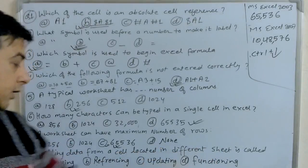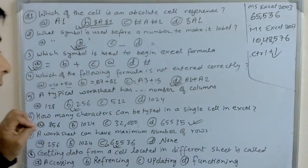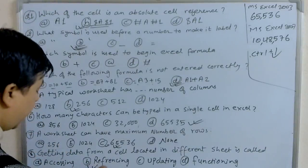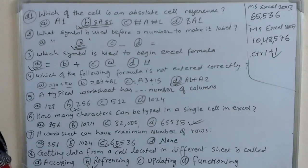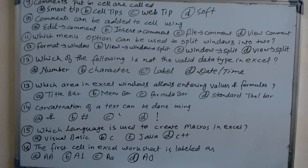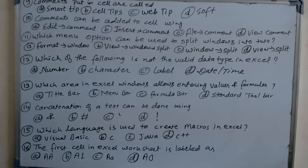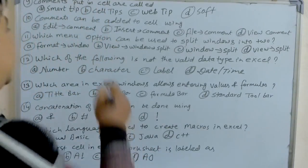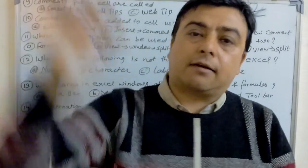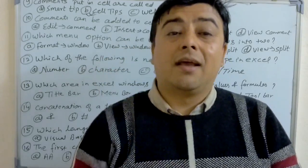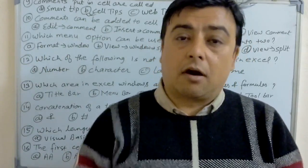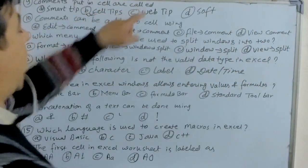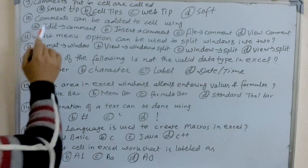Eighth question: getting data from a cell located in a different sheet is called what? When we get data from a different cell or sheet, we take the reference of that cell — that's why it is known as referencing. Ninth question: comments put in a cell are called what? Comments put in a cell are called cell tips. After putting a comment, you can see a triangular red shape in the right corner of the cell.